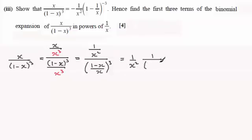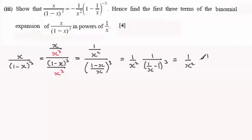Now when it comes to (1 minus x) over x, I can divide each of the two terms by x, so I've got 1 over x minus x over x, which is 1. So you get 1 over x minus 1. Now if I pull out a minus 1 from this bracket — square bracket, minus 1 — then I've got 1 minus 1 over x, and all of this is cubed.